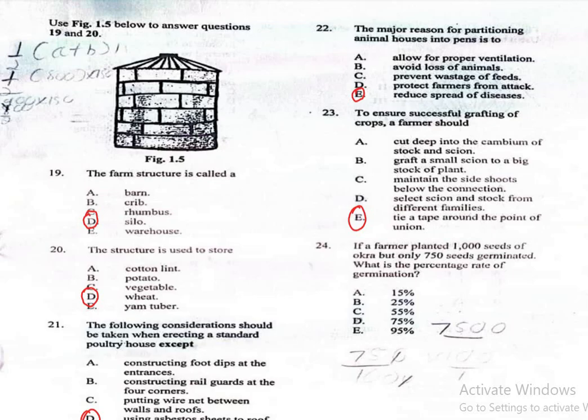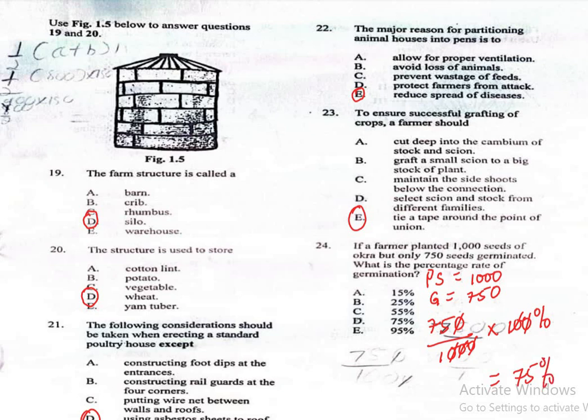Question 24. If a farmer planted 1,000 seeds of okra but only 750 seeds germinated, what is the percentage rate of germination? We were told that the planted seeds is equal to 1,000. Germinated 750. Germination rate is simply 750 out of 1,000 times 100%. So we are left with 75%, which is option D.